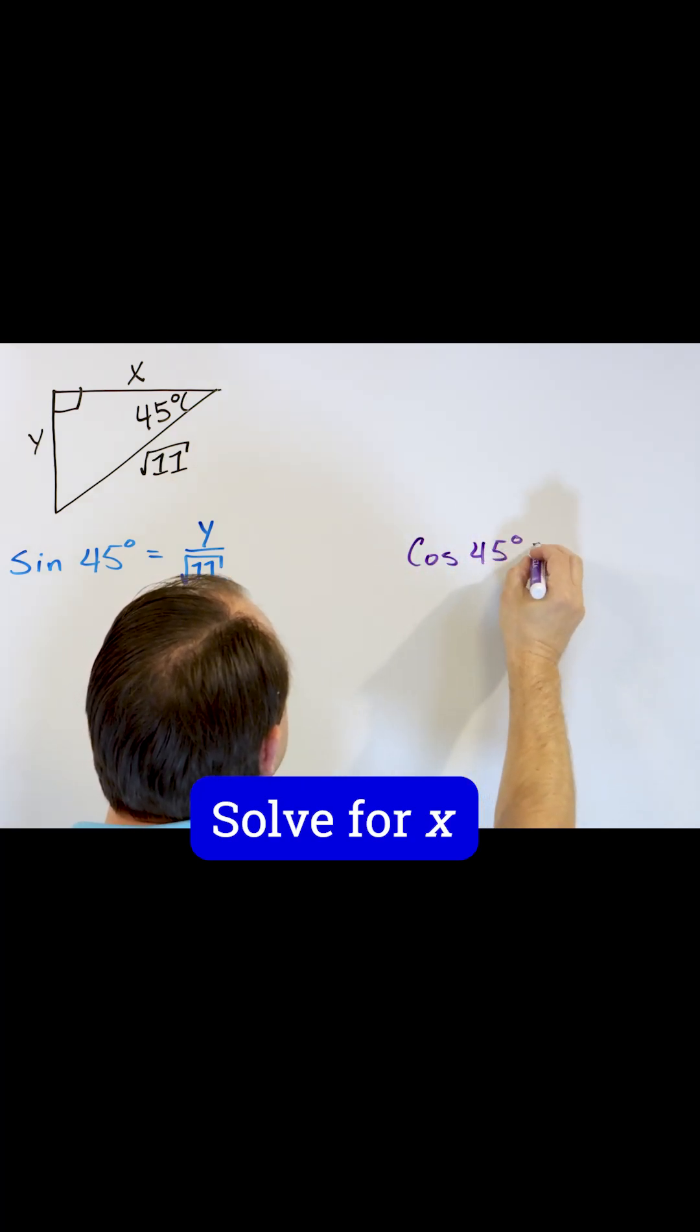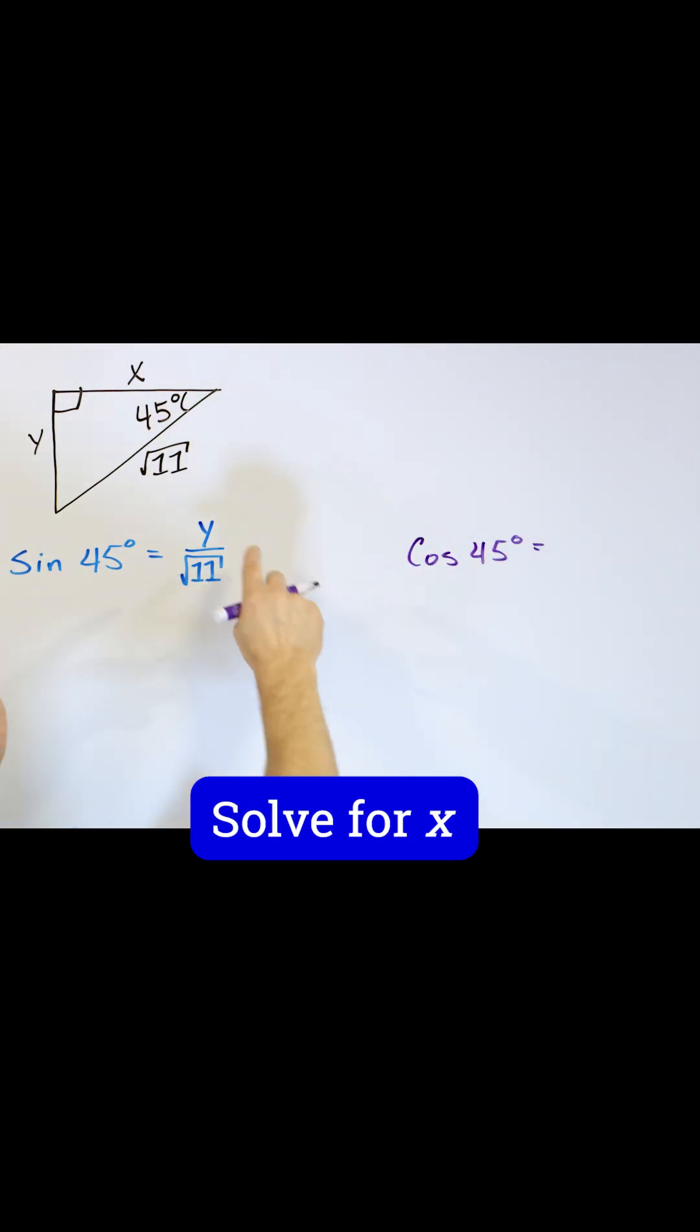Cosine of 45 degrees. Cosine is adjacent over hypotenuse. But from the point of view of this angle, the adjacent side is this one.